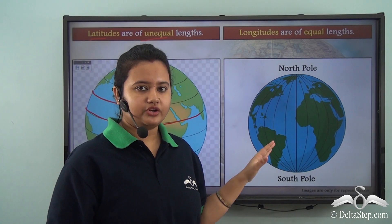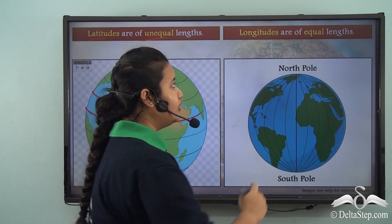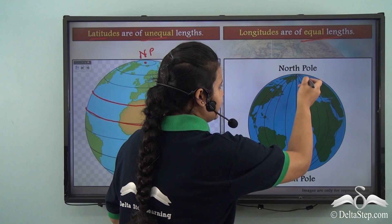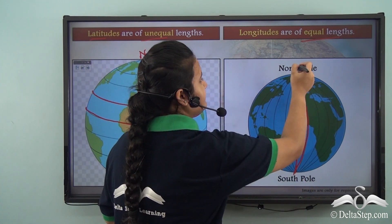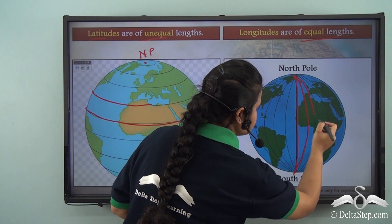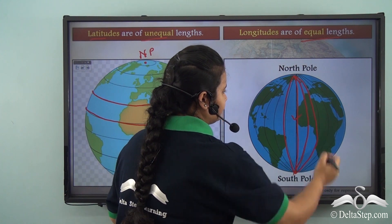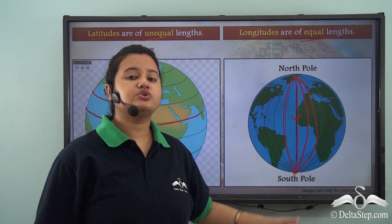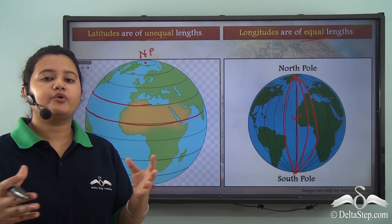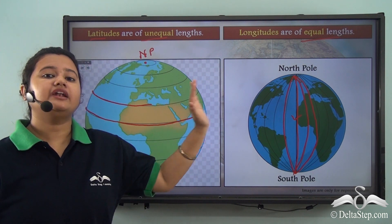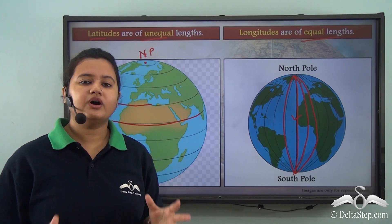Now, coming to the longitudes. From the picture, we can understand that the longitudes are of equal lengths. Each line of longitude is equal to the next consecutive line of longitude. So the size of each longitude is the same. Here we come to another point of distinction: latitudes are of unequal lengths, whereas longitudes are of equal lengths.